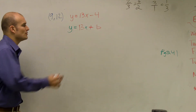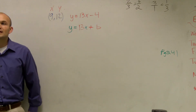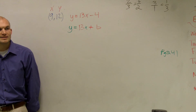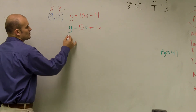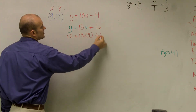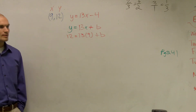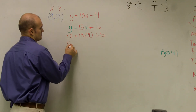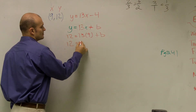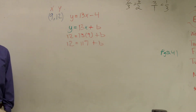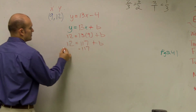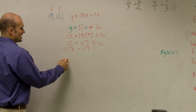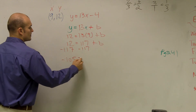So to find that, I'm going to plug in x and y. Because every coordinate point has an x and a y coordinate. So therefore, to plug them in for x and y, y is going to be 12 equals 13 times 9 plus b. So therefore, now I just do 13 times 9, which is 117. Not 90. Then I'll subtract 117, and I get negative 105 equals b.